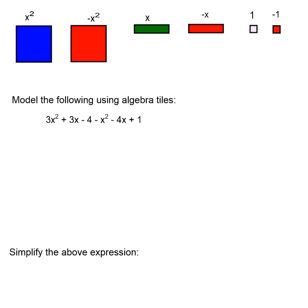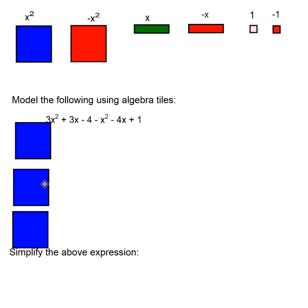For example, if it asks you to model this using algebra tiles, so 3x squared, what that's asking you to do is to take 3 x squared tiles, and we're going to add 3x tiles. Then we're going to take away 4. That means minus 4. So that sign, that negative sign, goes with the 4. That means put 4 negative tiles down.